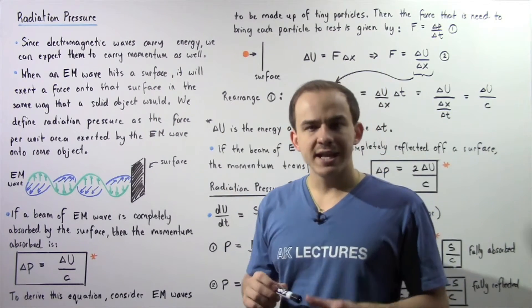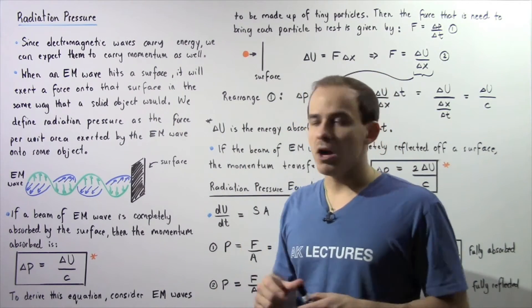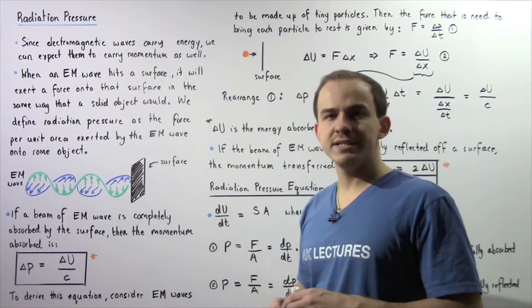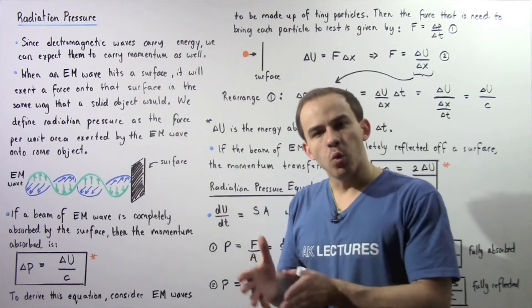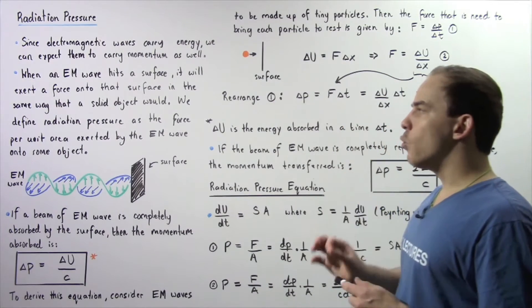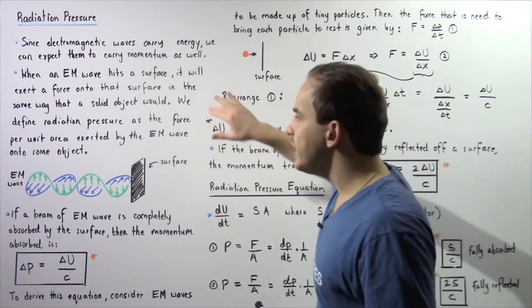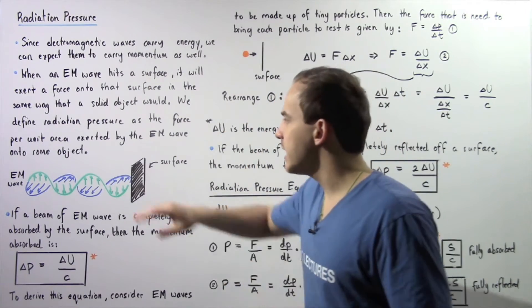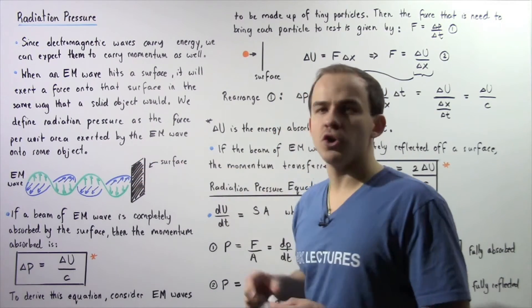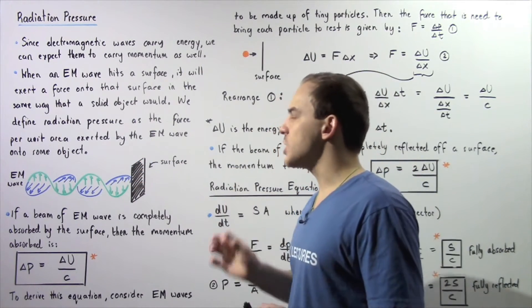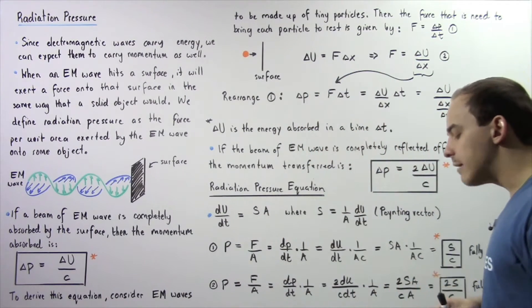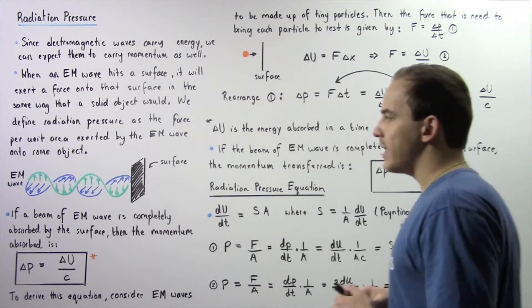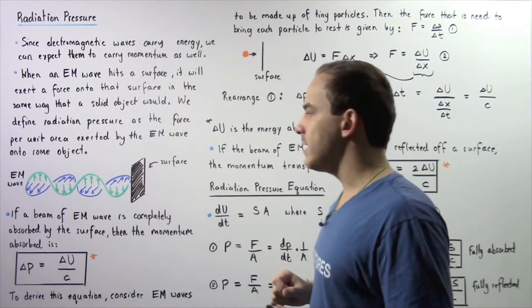Now when an electromagnetic wave hits the surface of some other object, it will exert a force onto that surface in the same exact way as a solid object would exert a force on that surface when it hits that surface. We define radiation pressure as the force per unit area that is exerted by the electromagnetic wave onto the surface of that object when it hits that object.